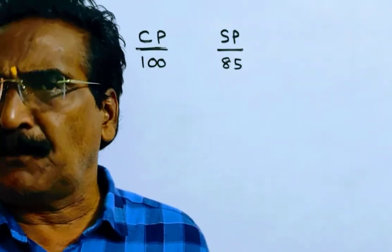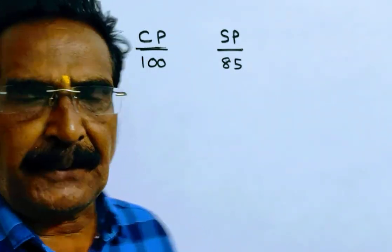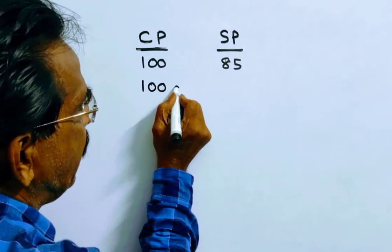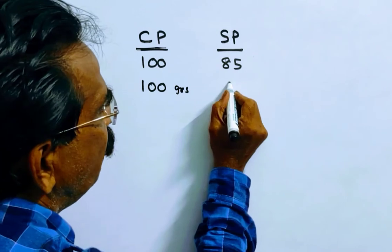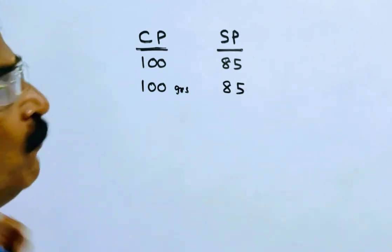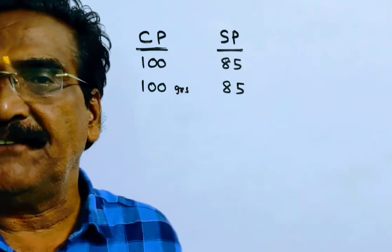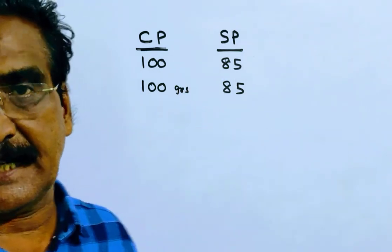Friends, if each gram is 1 rupee, he has to give 100 grams for rupees 85 only. This is 15% loss transaction.